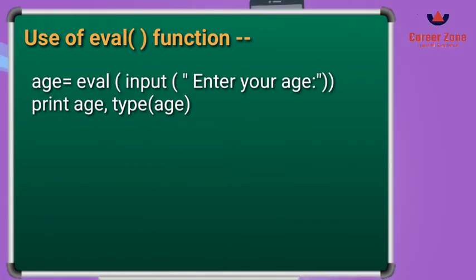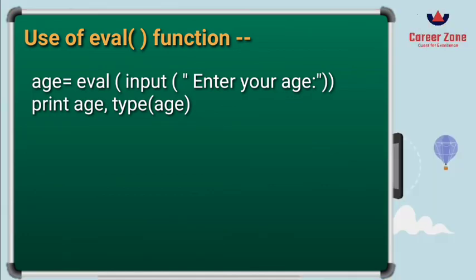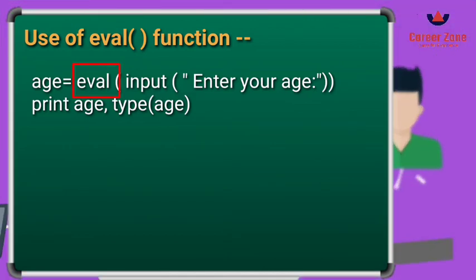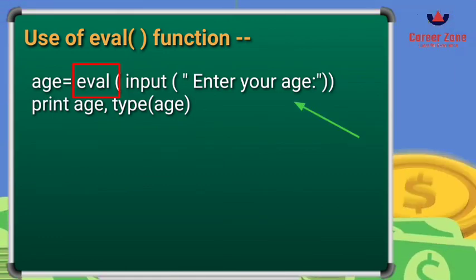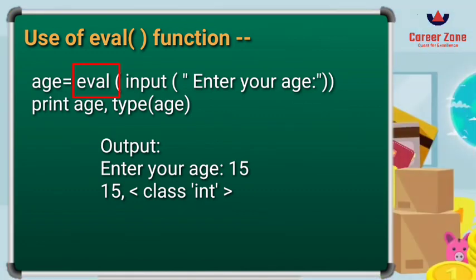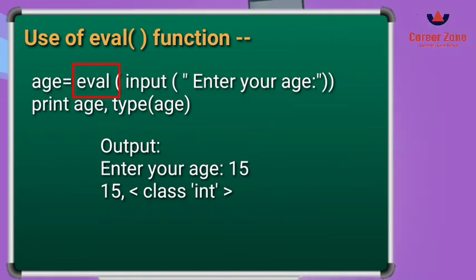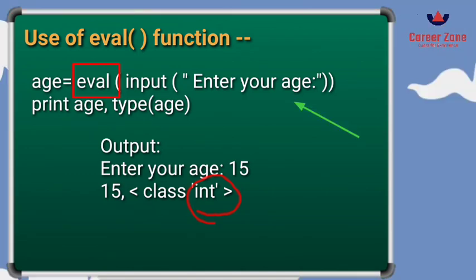You can also use eval() with the input statement. For example, writing age = eval(input('Enter your age:')) asks the user to enter their age through input, but converts the output using eval(). If I then print age and type(age), and the user entered 15, it gives 15 and class int — meaning the data type of the variable age is integer. This is how you use eval() along with input and strings.